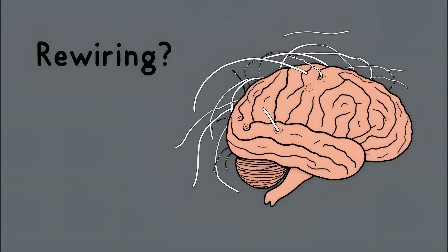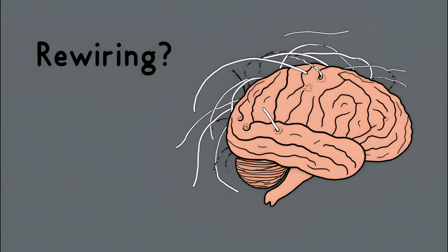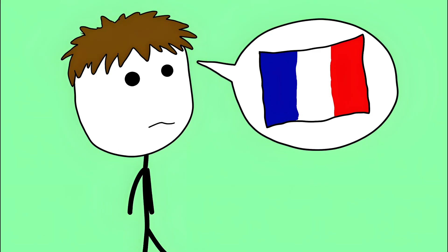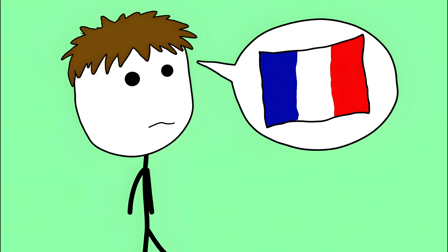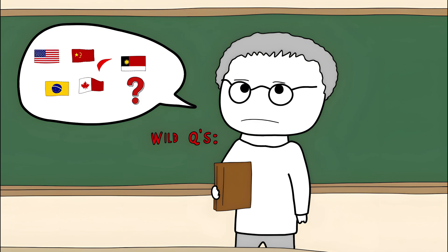Scientists have tried to explain it as the brain's language centers rewiring after trauma, but that doesn't explain why the new accent sometimes doesn't even match a real region. Some people develop hybrid accents that linguists can't place at all.